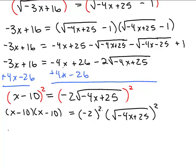So on the left-hand side, FOIL method, X squared minus 10X, minus 10X plus 100. On the right-hand side, a negative 2 when you square it is positive 4 because it's negative 2 times negative 2. And that gets multiplied by this. Well, when you square a square root, you get what's underneath the square root sign. So you get to multiply that by negative 4X plus 25.